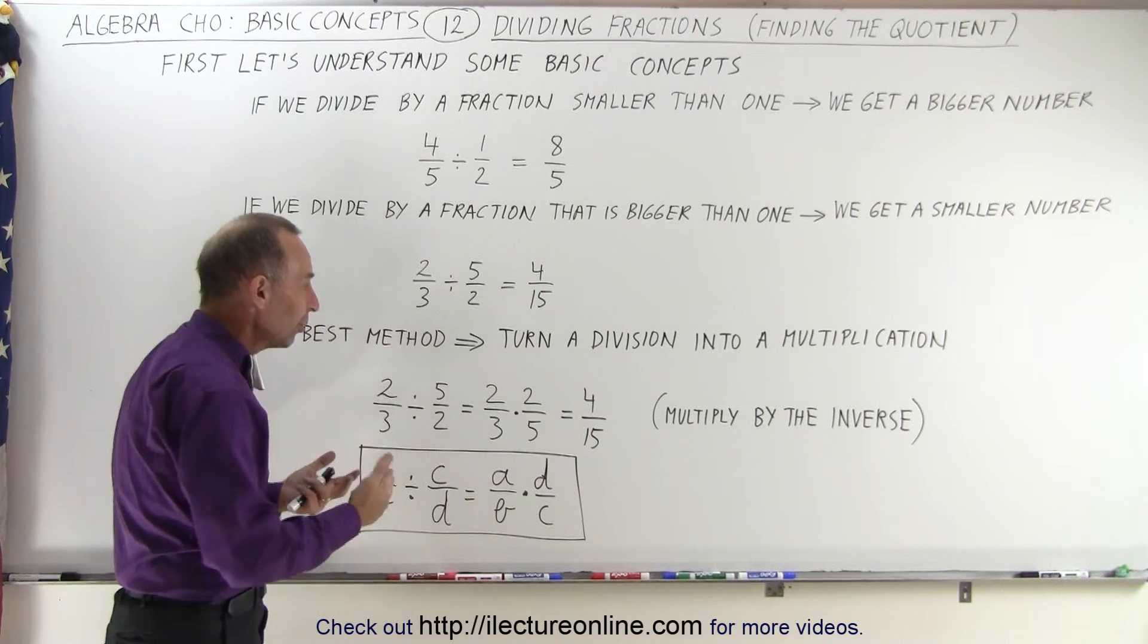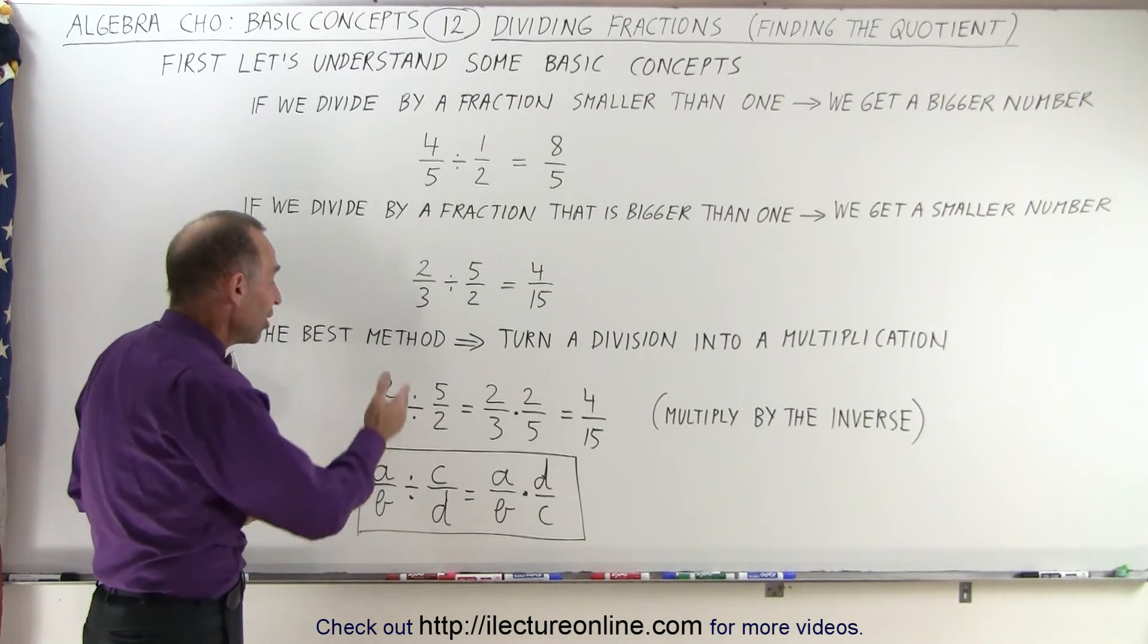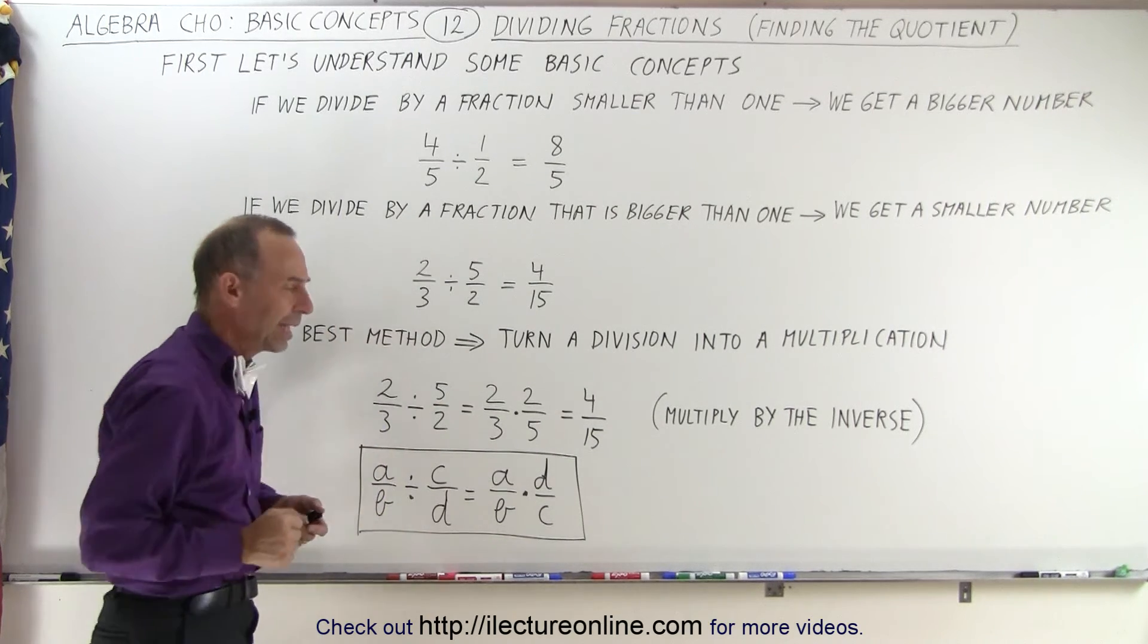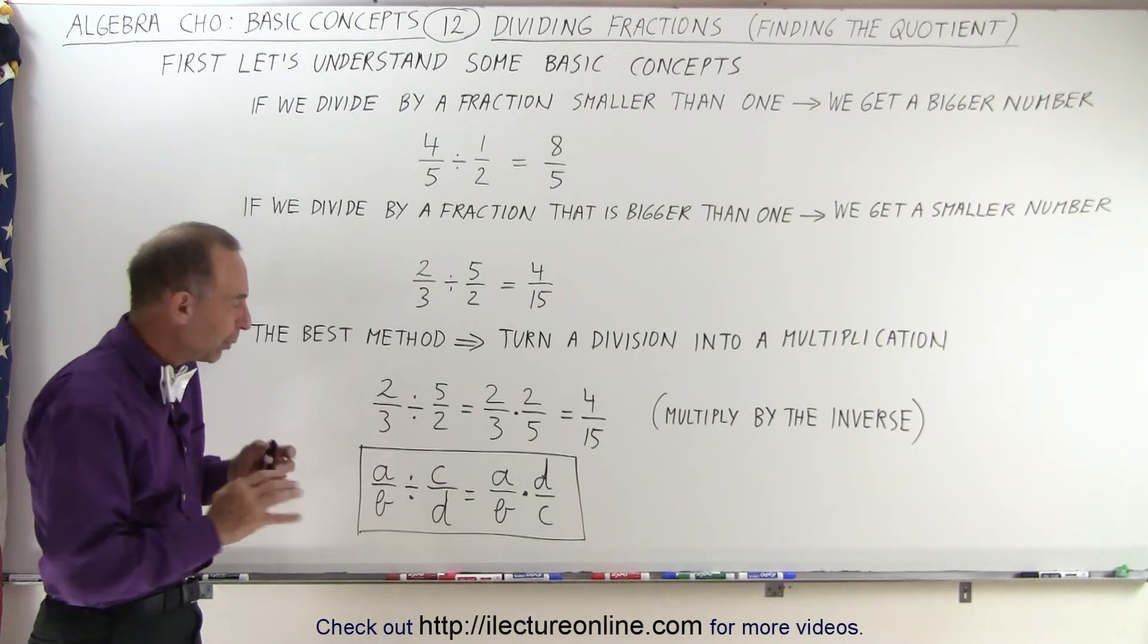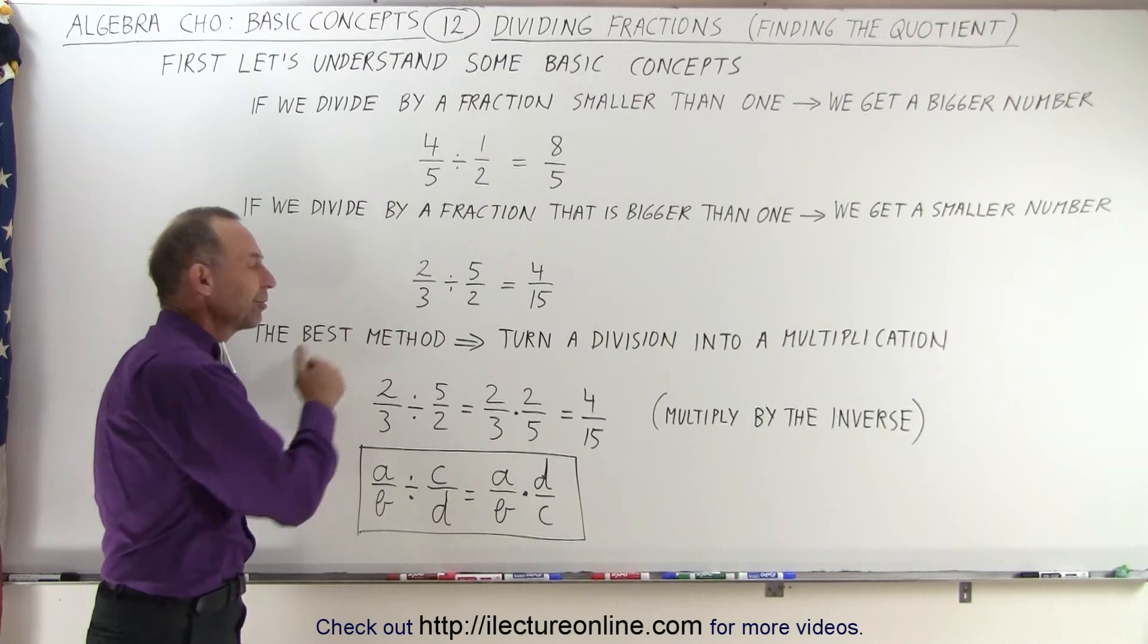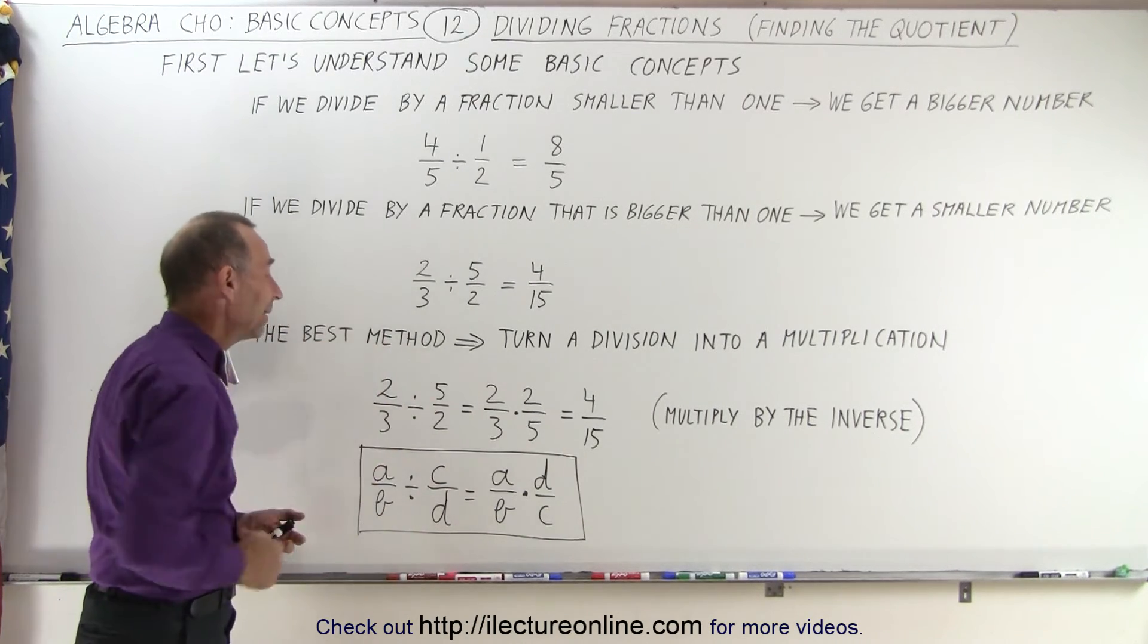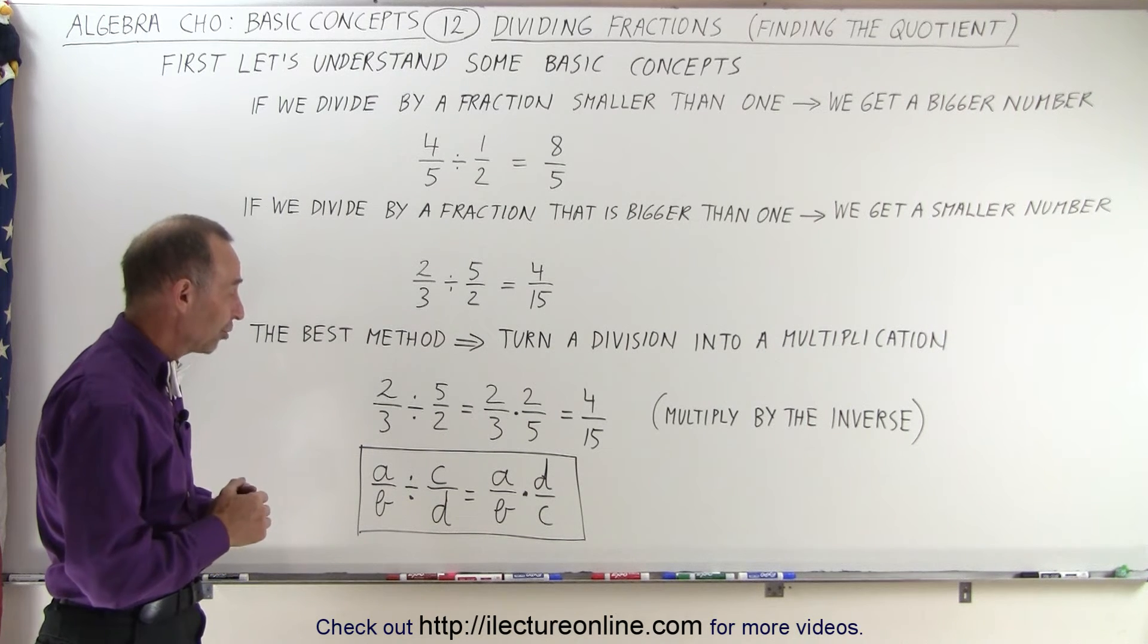So what we do is we simply multiply by the inverse of the fraction, and that's how we change the division into a multiplication. If we don't do that, it would sometimes be very difficult to try and figure out how to divide a fraction by another fraction. It's simply better to turn it into a multiplication by taking the inverse of the fraction.